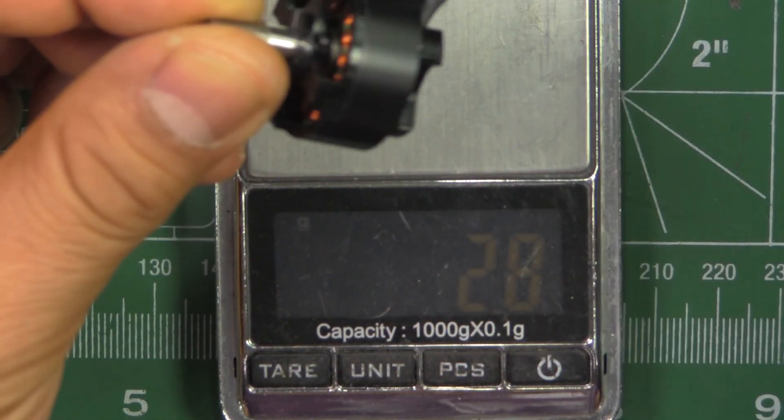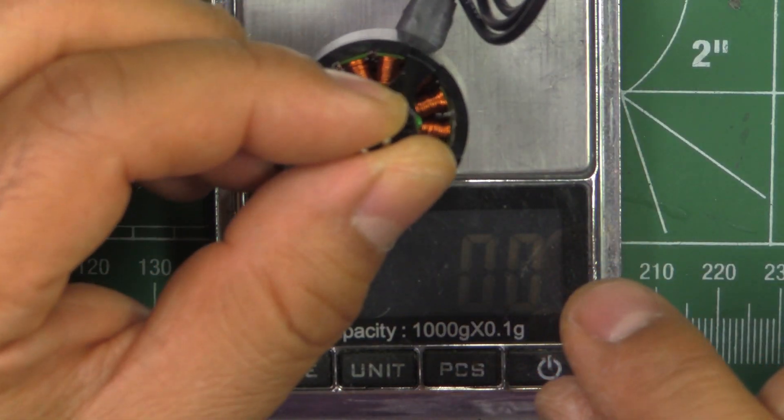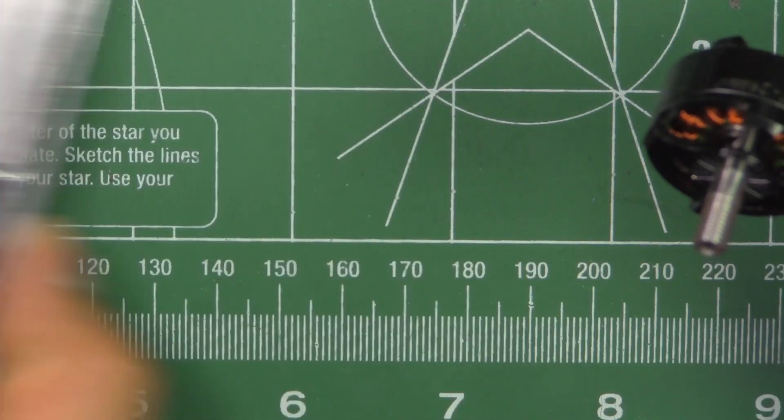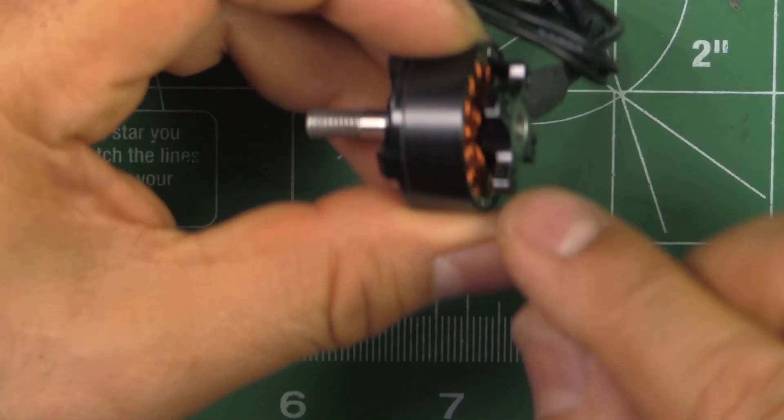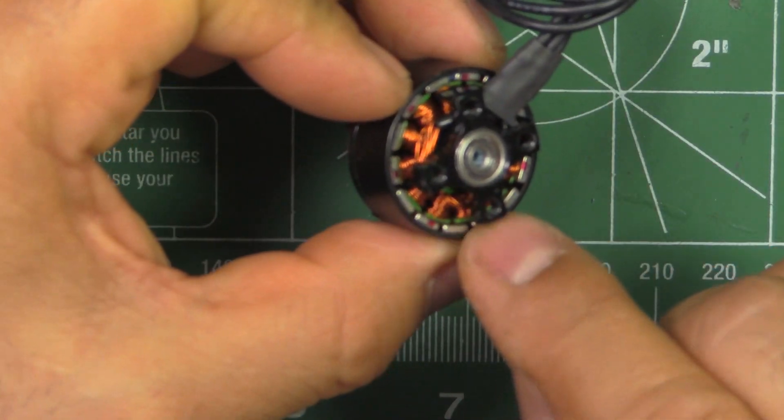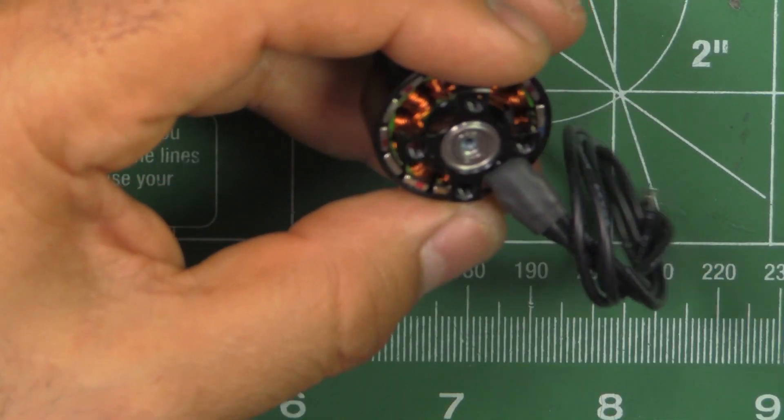So that's 32 grams for a 2207. Pretty decent weight, pretty good weight. That's pretty light actually.